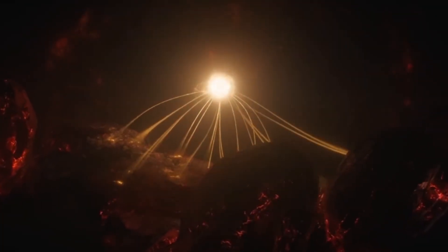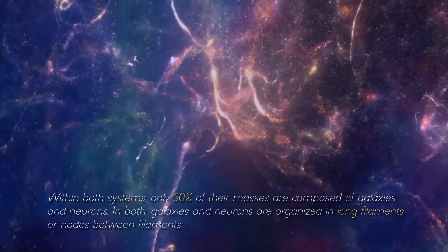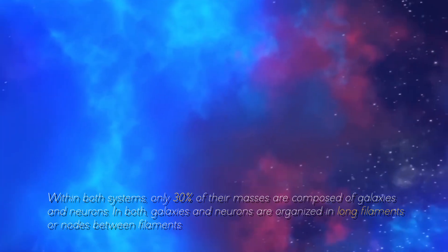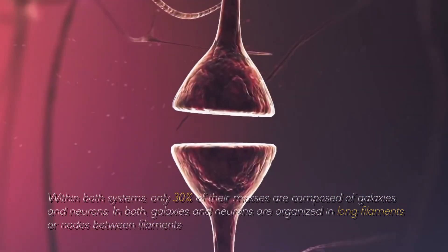Thus, it is not that our brain is like a universe, or that the universe is a brain of titanic proportions, but that their dynamics are similar. Within both systems, only 30% of the masses are composed of galaxies and neurons. In both, galaxies and neurons are organized in long filaments and nodes between filaments.